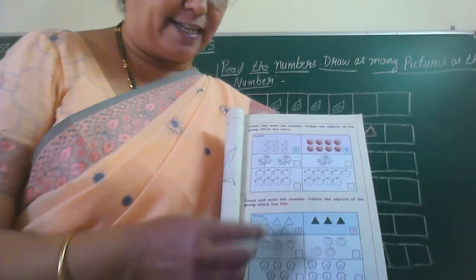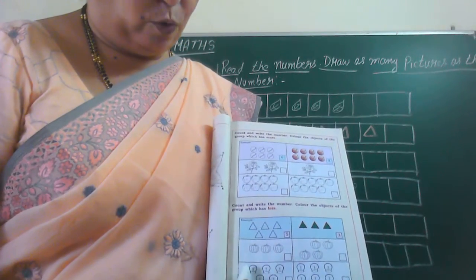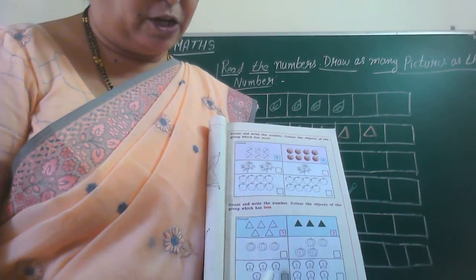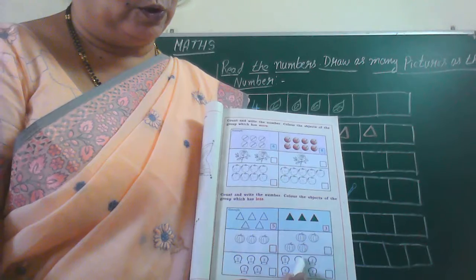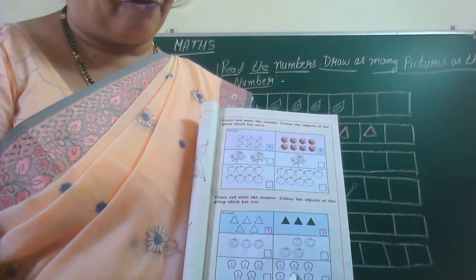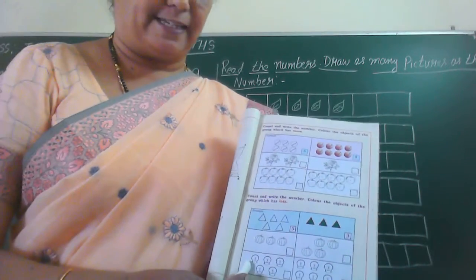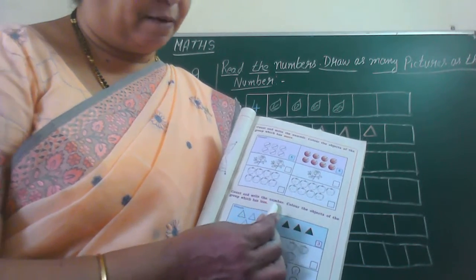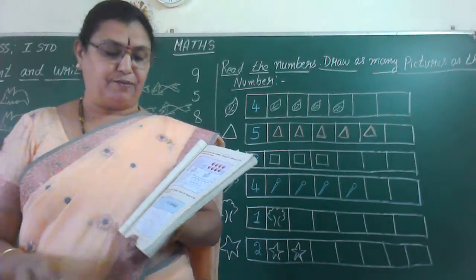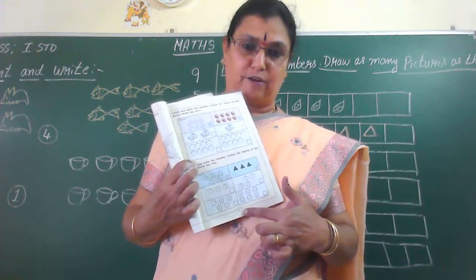Next one. One, two, three, four, five. Write the number five in this box. Again count here: one, two, three, four, five, six. You have to write the number six here. Which is less in this? This five is less. So five you have to colour. They have given colour and write the numbers. Colour the objects of the group which is less. Here the object which is more you have to colour; here which is less you have to colour. This is also textbook activity. Will you do it?